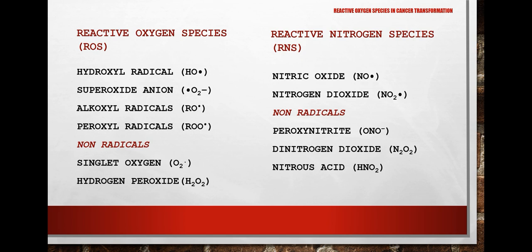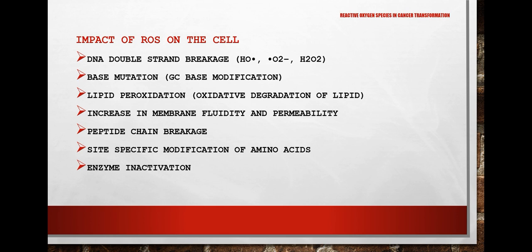Free radicals are broadly divided into reactive oxygen species (ROS) and reactive nitrogen species (RNS). Under ROS, we have hydroxyl radicals, superoxide ions, alkoxy radicals, peroxyl radicals, singlet oxygen, and hydrogen peroxide. Under RNS, we have nitric oxide, nitrogen dioxide, peroxynitrite, dinitrogen dioxide, and nitrous acid.